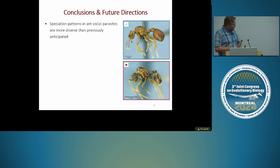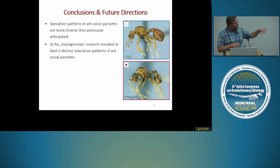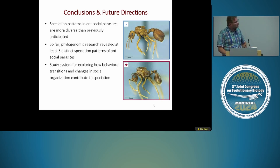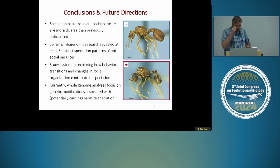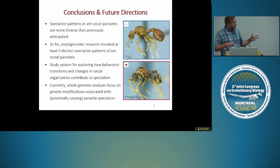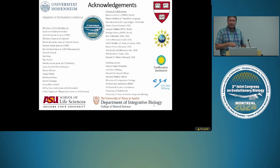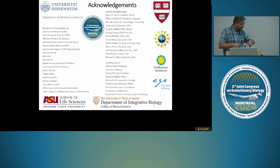Speciation patterns in ant social parasites are much more diverse than previously anticipated. Our phylogenomic research has revealed at least five distinct speciation patterns. We have already sequenced whole genome sequences and are conducting analyses to understand better the genetic modifications associated with — and potentially causing — parasite speciation. I would like to acknowledge the members of my lab, without whom this study would not have been possible, my friends and collaborators, and funding sources. If you have any questions, let me know. Thank you.